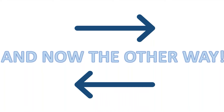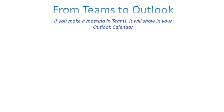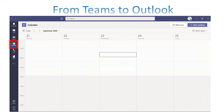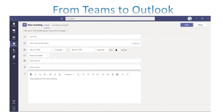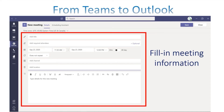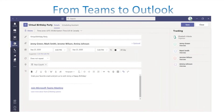Now let's go the other way — from Teams to Outlook. If you create a meeting in Teams, it will show up in your Outlook calendar. In Teams, go to your calendar, click on the date you want, and fill out the meeting information — it looks similar to an Outlook calendar invite. For example, a virtual birthday party for Jenny. They'll receive an email invitation, and you'll also receive an email when they RSVP. The Teams meeting link is automatically included.